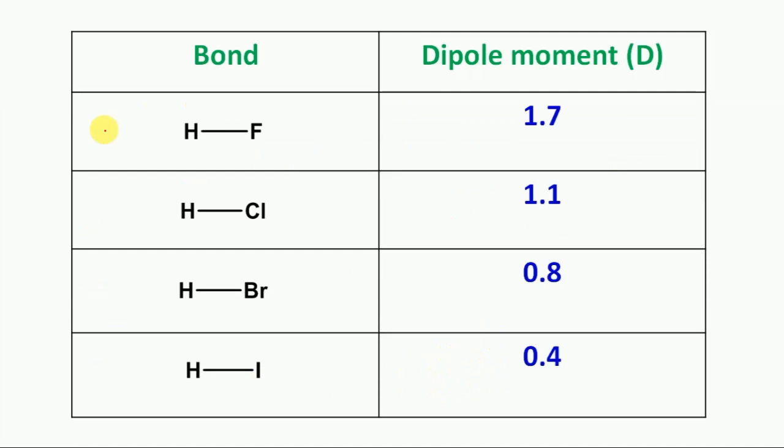Next, HF has a dipole moment of 1.7, HCl is 1.1, HBr is 0.8, and HI is 0.4.